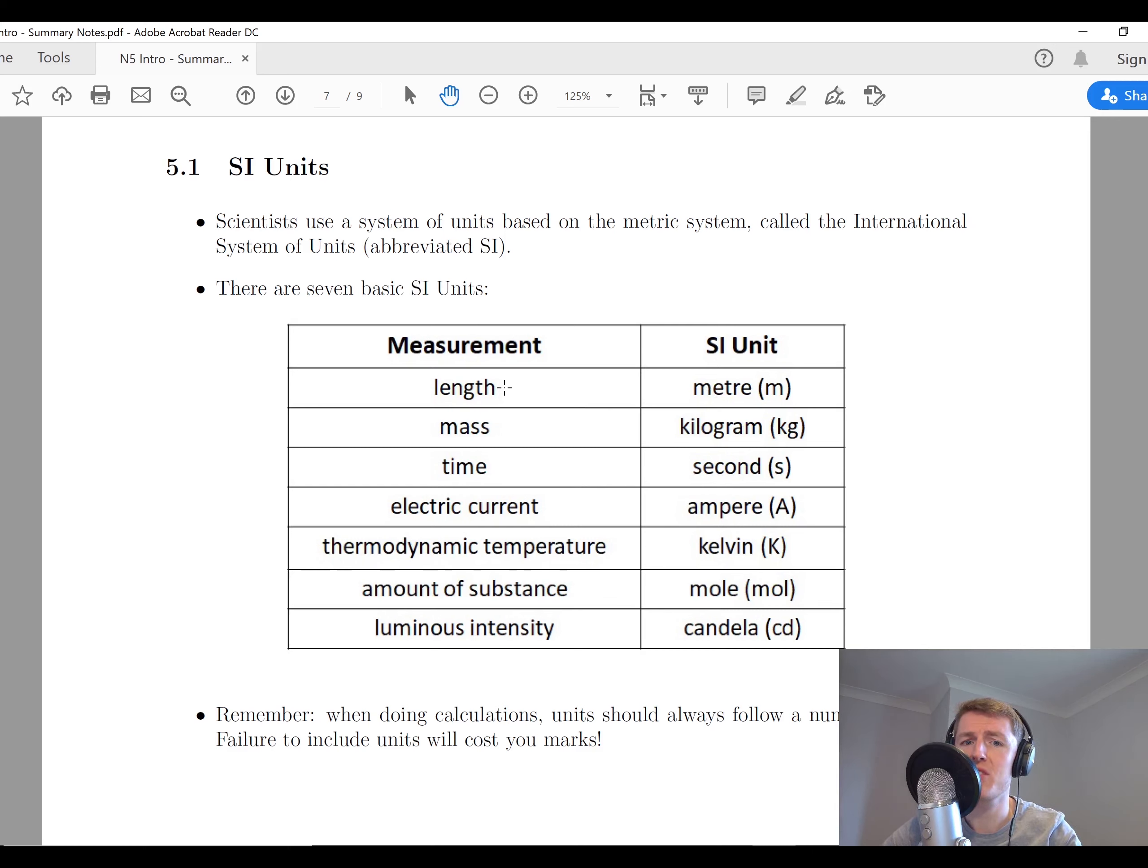We'll see that length, so a distance, is measured in meters. Mass is measured in kilograms, not grams. Time is measured in seconds, and that's why we always use these things when doing like speed distance time formulas and stuff like that.